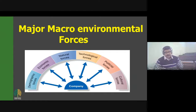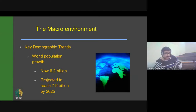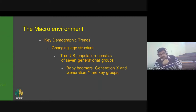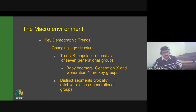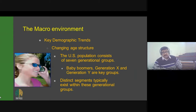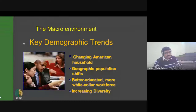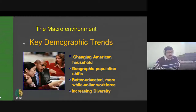The key demographic trend to understand is world population growth. Our world population is about 6.2 billion, projected to reach 7.9 billion by 2025. In the US, the population consists of seven generational groups — Baby Boomers, Generation X, and Generation Y are the key groups, with distinct segments typically existing within these generational groups. Key demographic trends also include changing American households, geographic population shifts, a better-educated and more white-collar workforce, and increasing diversity.